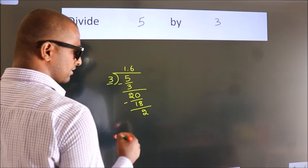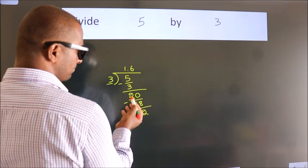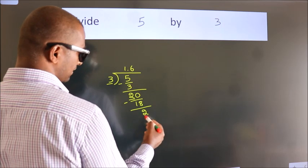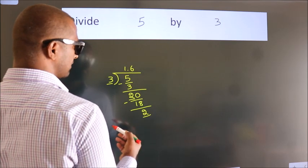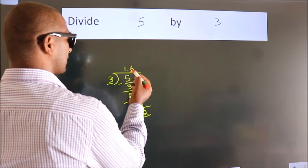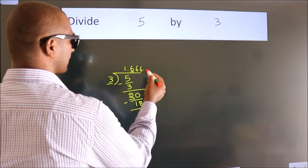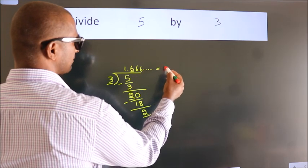Now you observe. We had 2 before and we got 2 again. That means this number keeps on repeating. So this is our quotient.